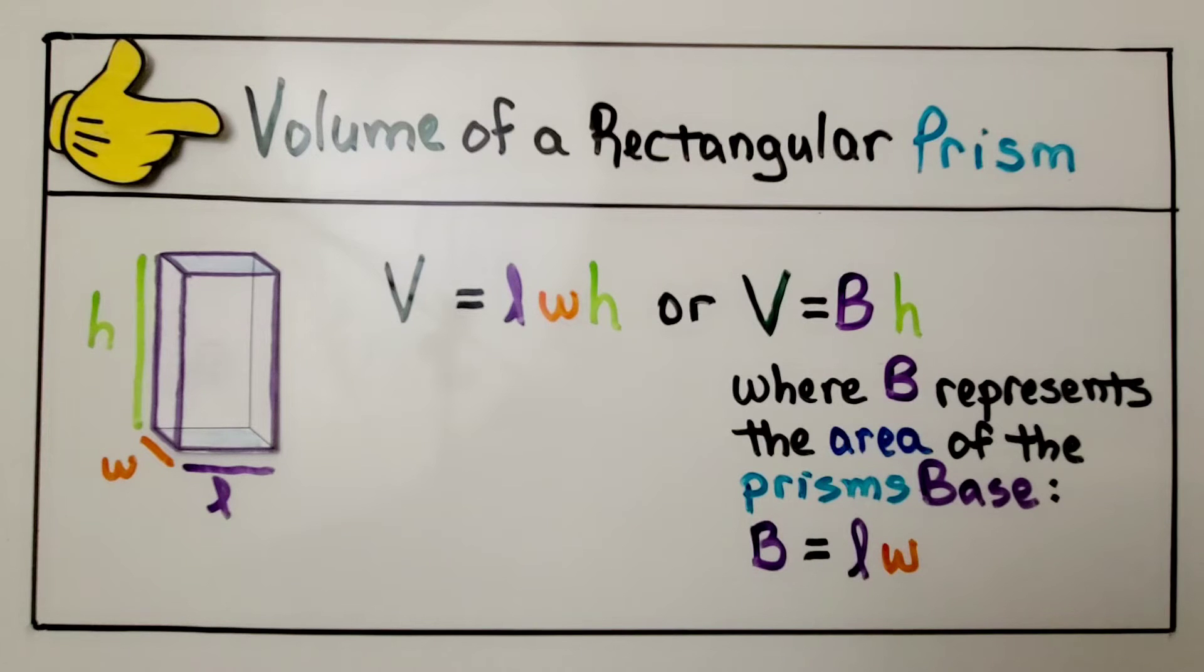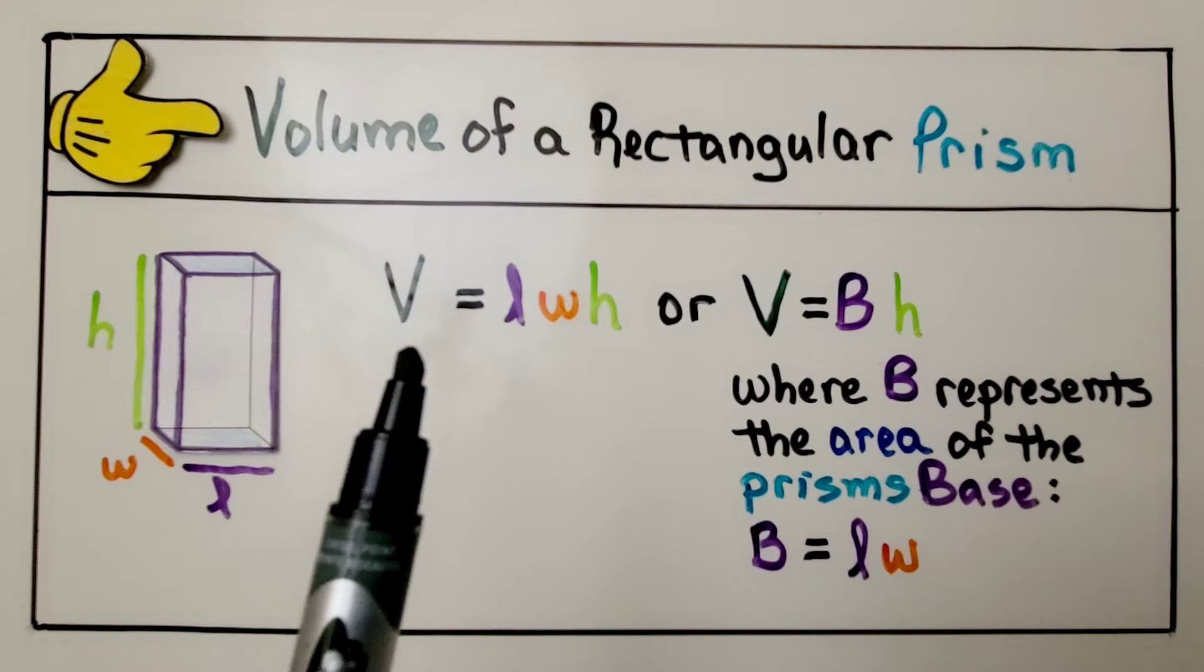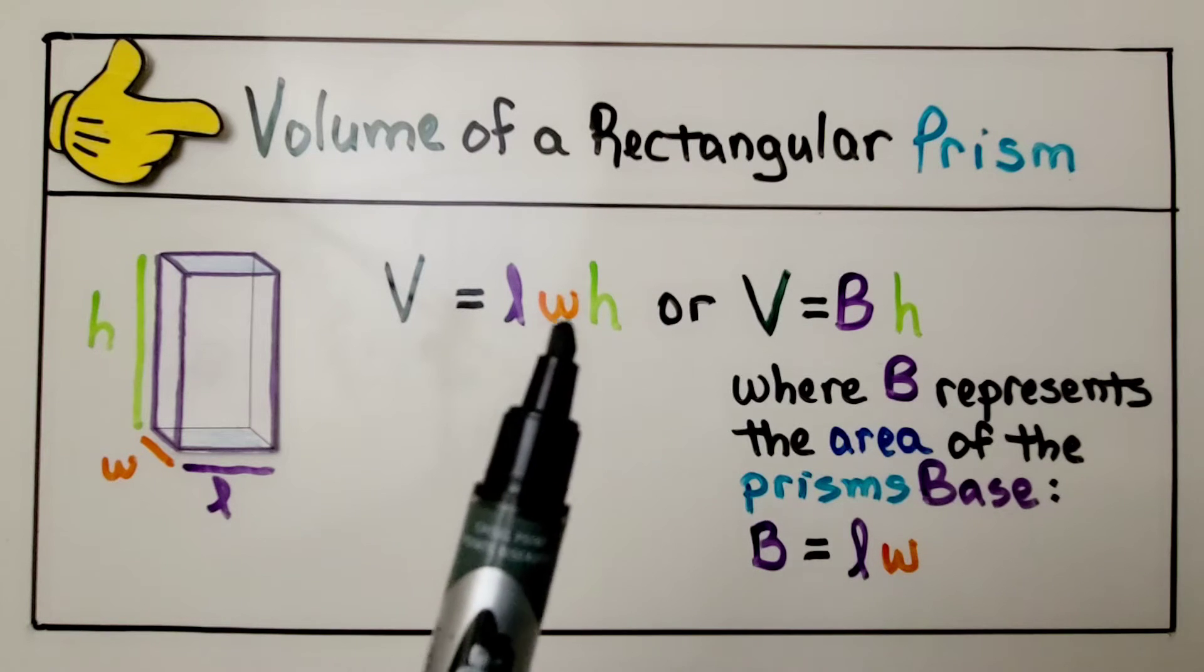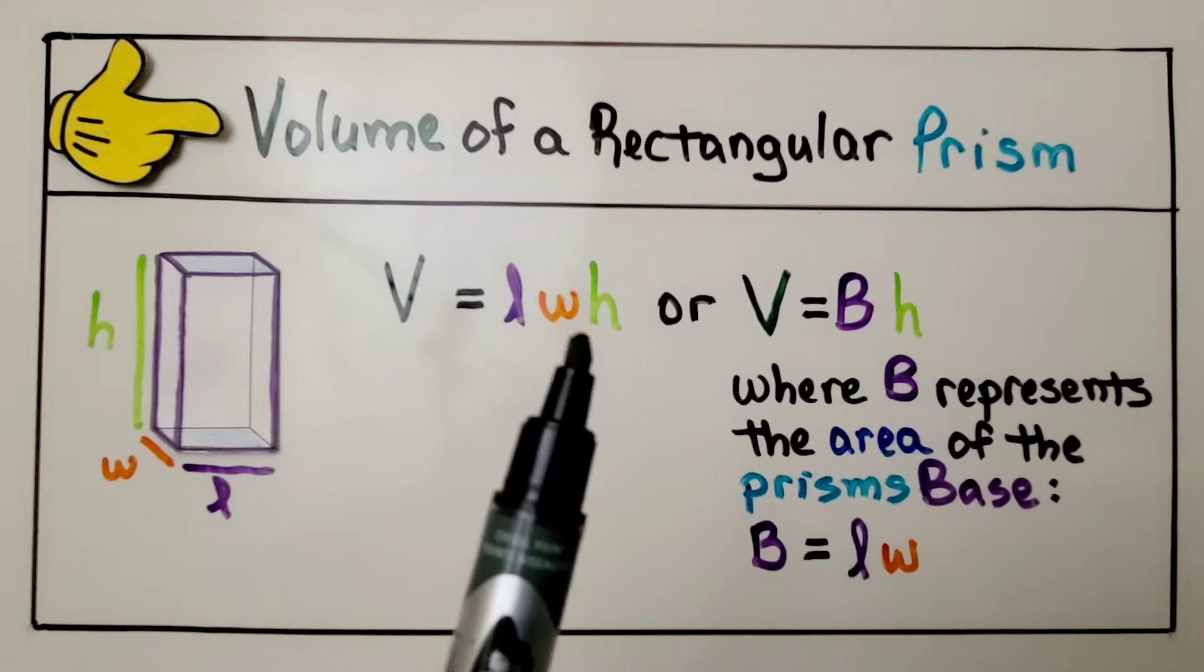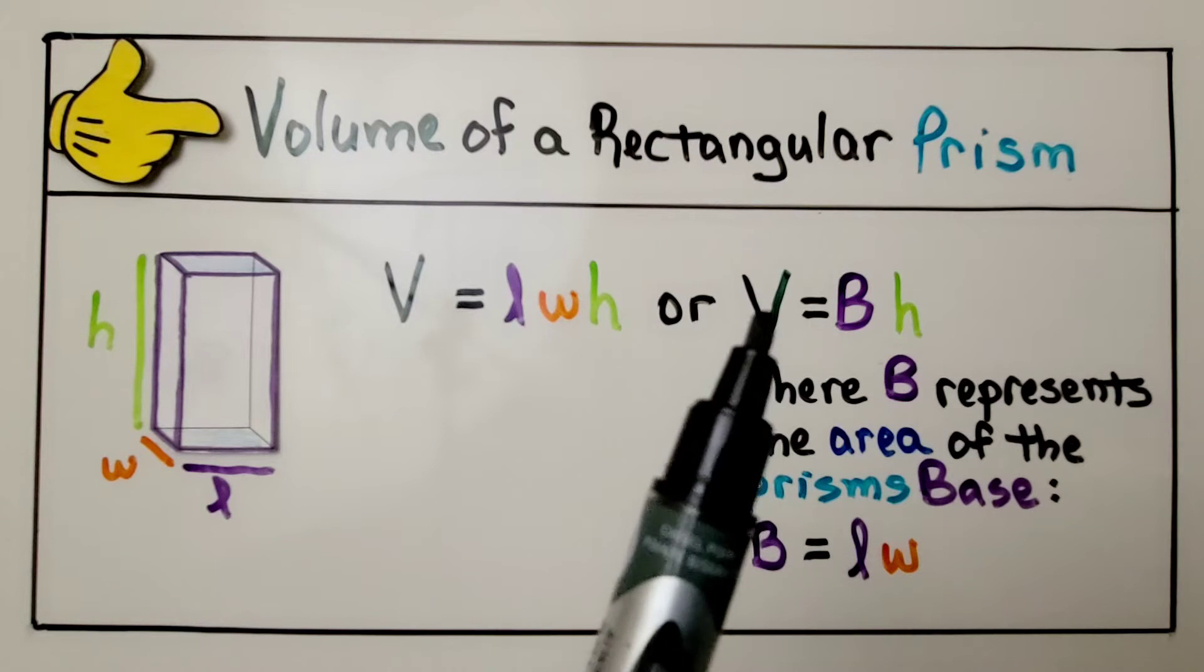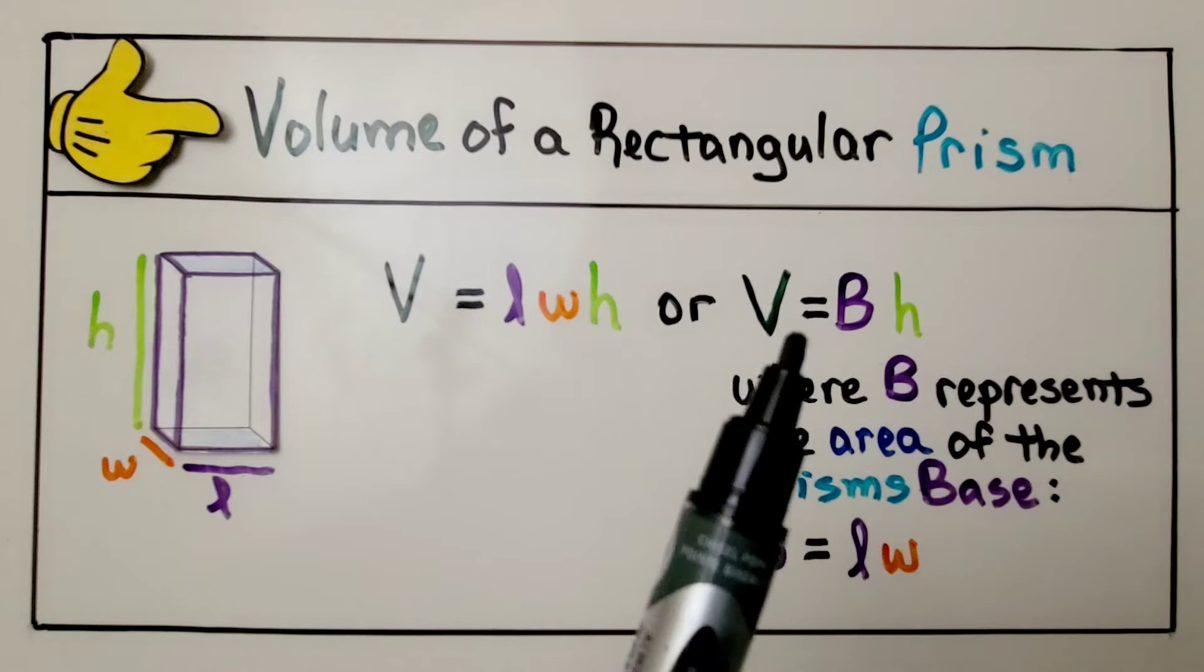For your notes, the volume of a rectangular prism can be found with the formula V for volume is equal to LWH for length times width times height.